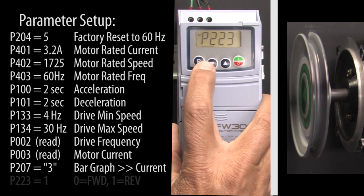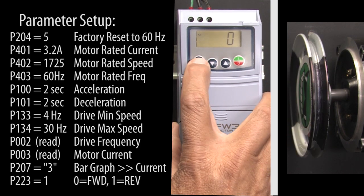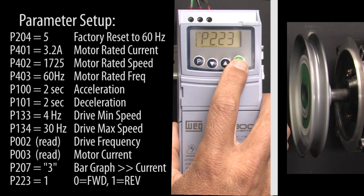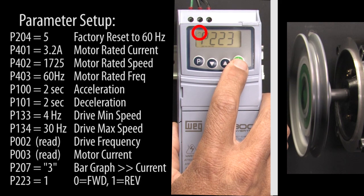Parameter 223 controls forward and reverse. Stop the motor, change it to a 1, hit P to accept that and now when we run the motor it rotates in the opposite direction and the rotation indicator up here also changes direction.